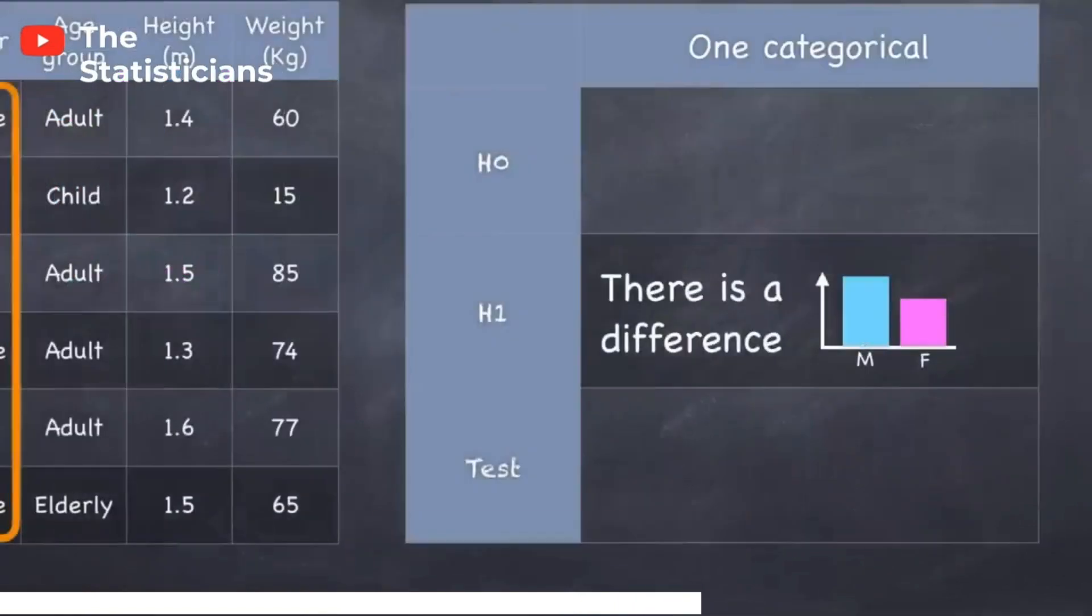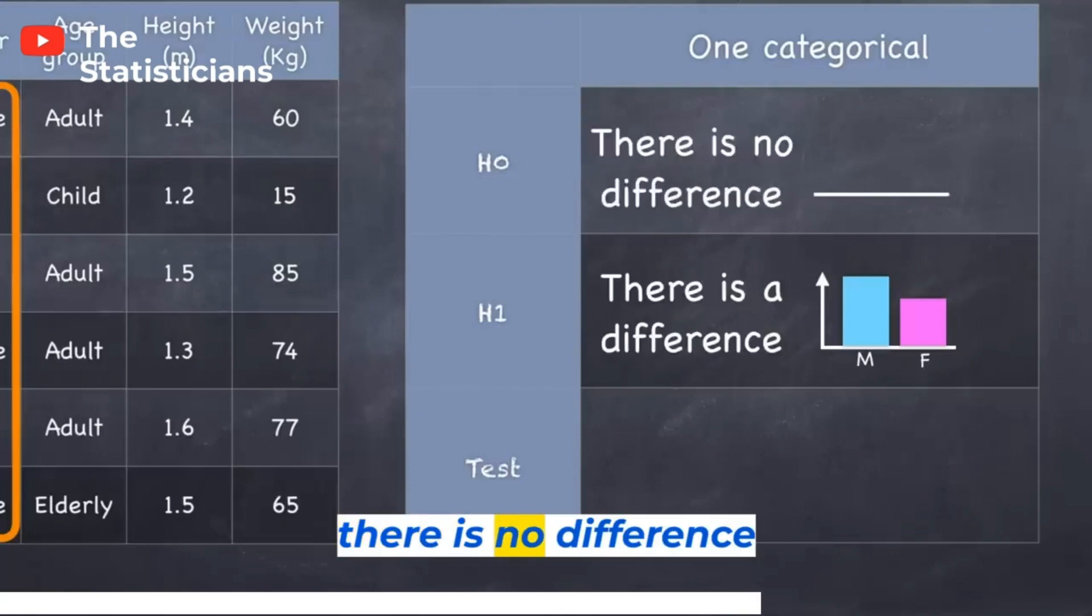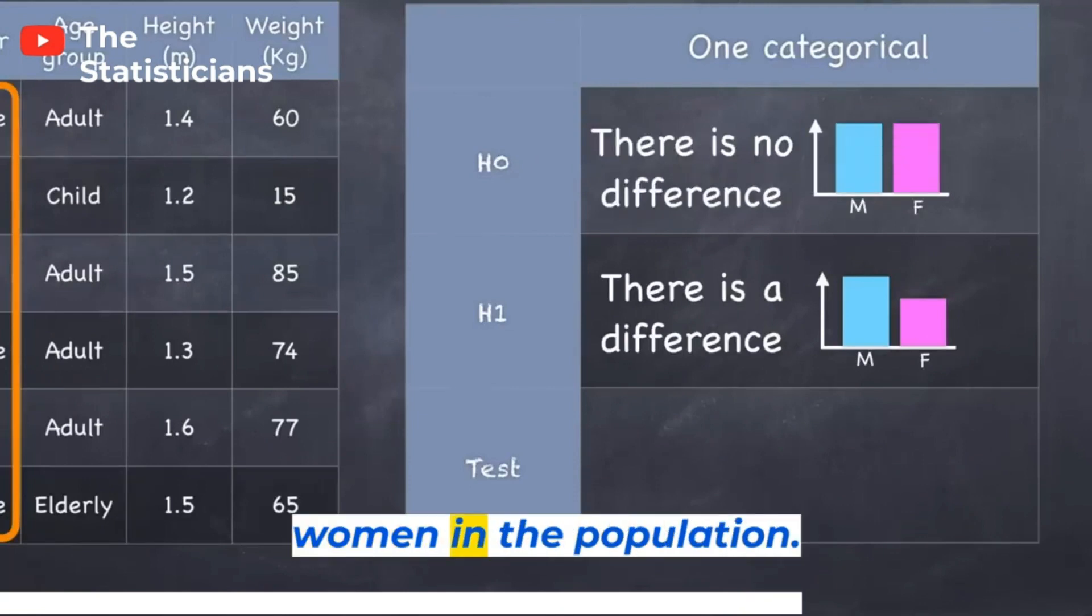So let's consider the possibility that in actual fact, there is no difference in the number of men and women in the population. And we call that our null hypothesis.